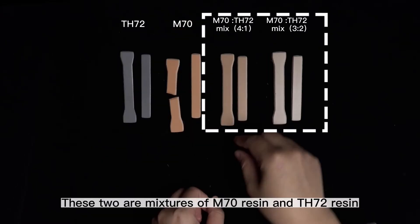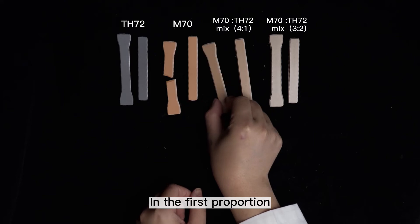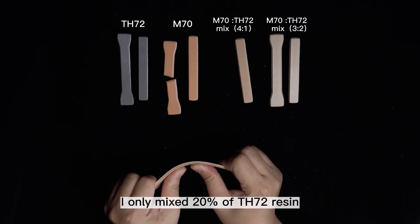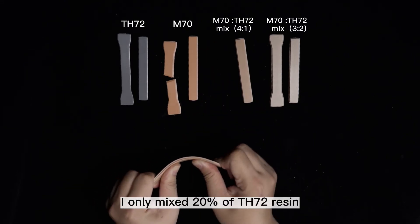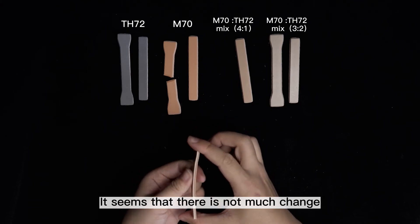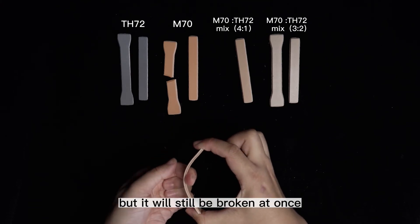These two are mixtures of M70 resin and TH72 resin. In the first proportion, I only mixed 20% of TH72 resin. It seems that there is not much change but it will still be broken at once.